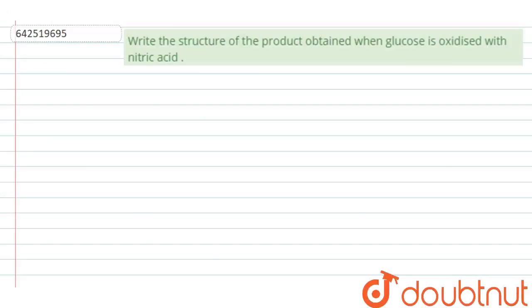The question given here is, write the structures of the product obtained when glucose is oxidized with nitric acid.